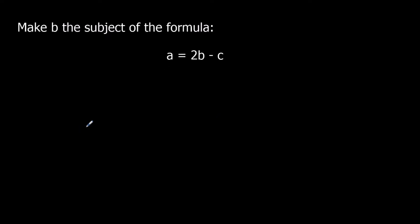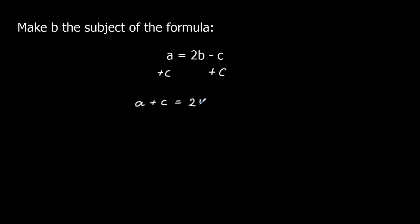Here's another question — again we're going to make b the subject of the formula. We need to get b by itself. We've got a minus c this time. To get rid of a minus c we do the opposite, which is plusing c, so we plus c to both sides of the equation. On the left side I've got a plus c, and on the right side I've got 2b.